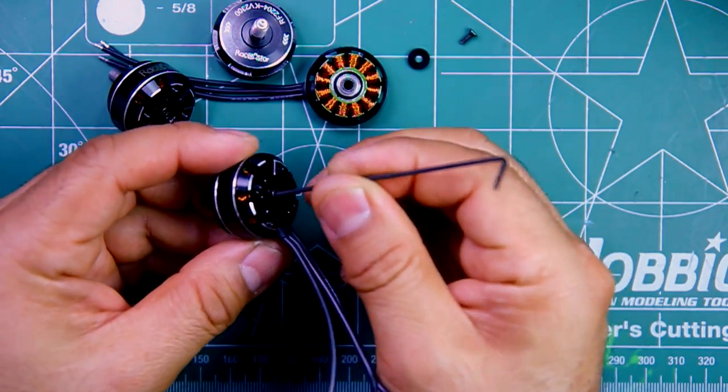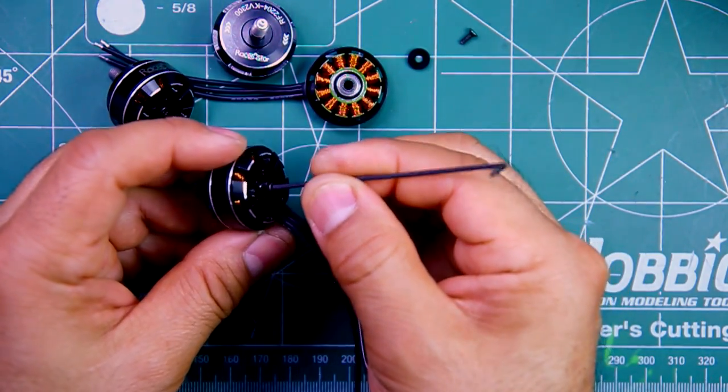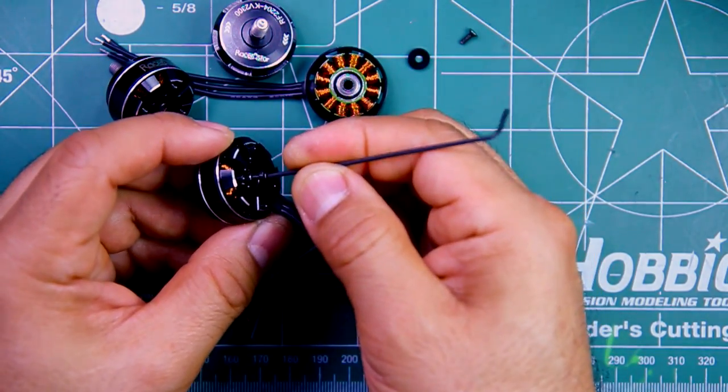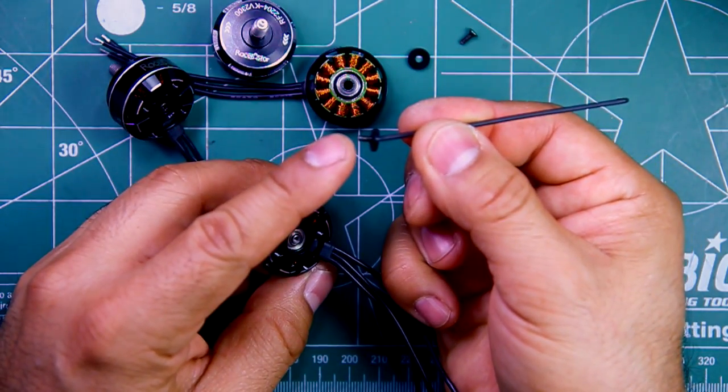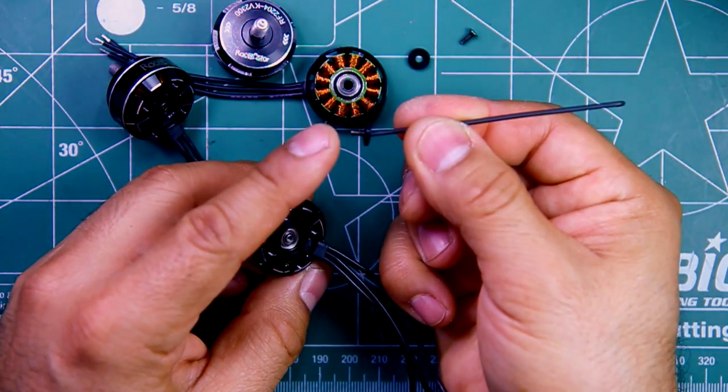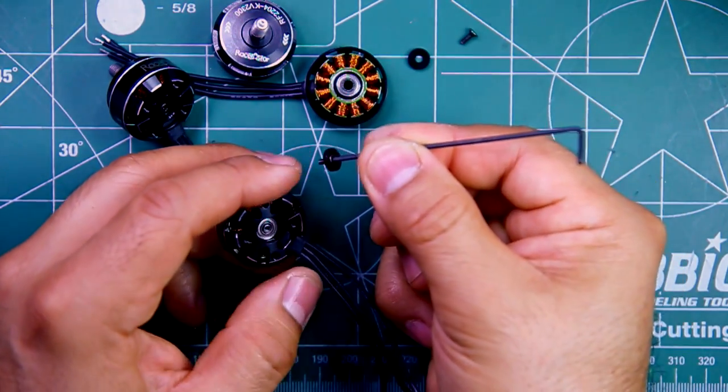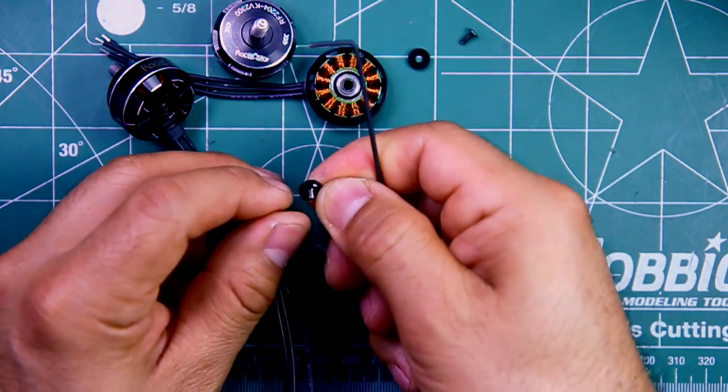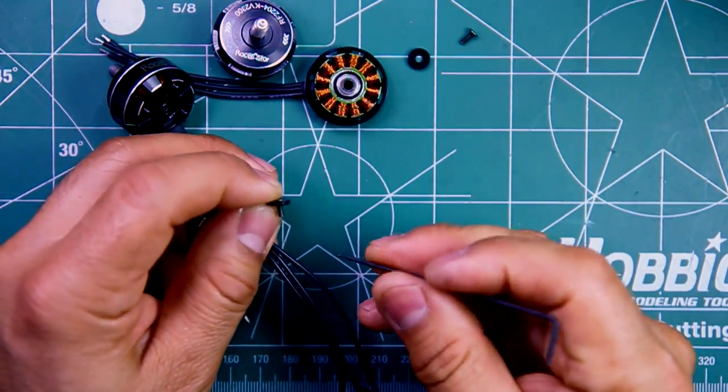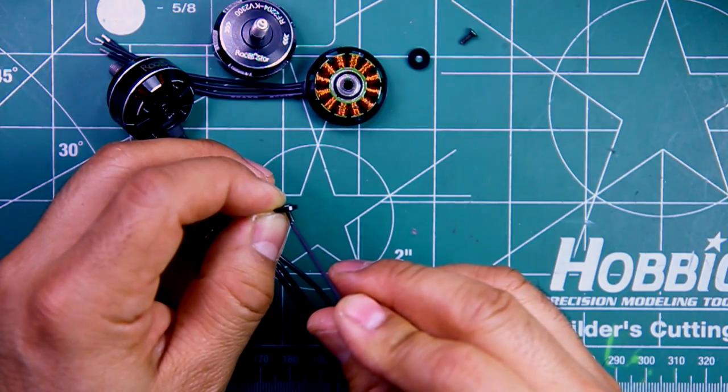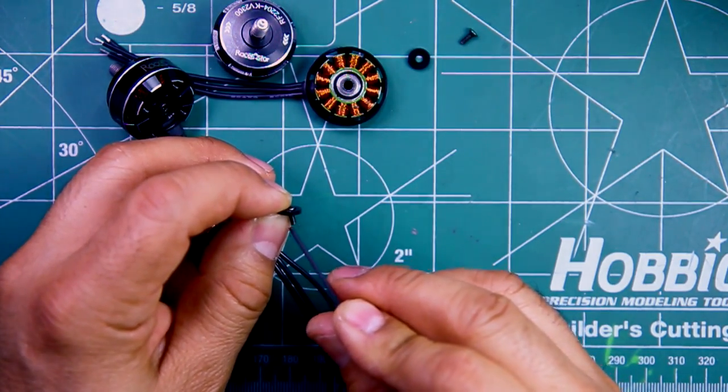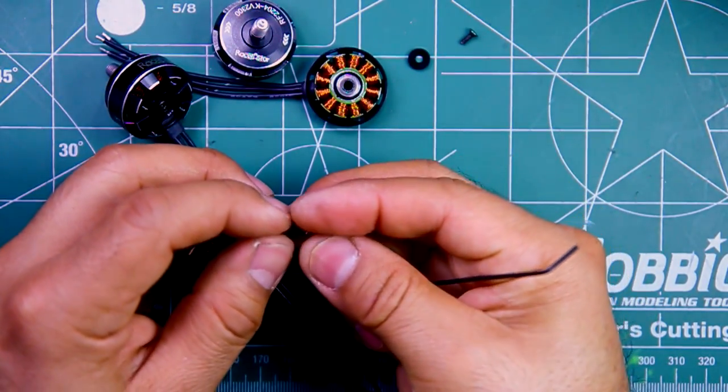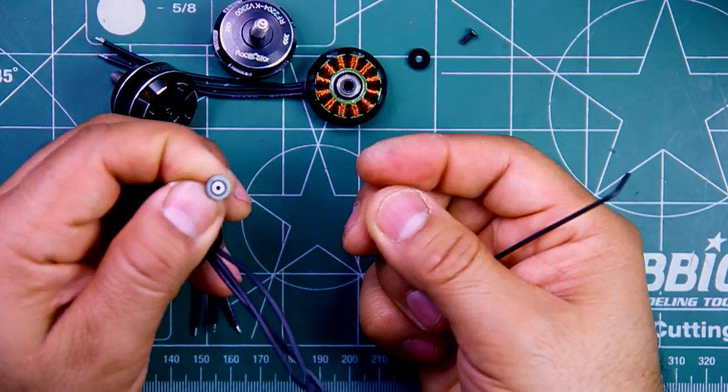So it would be good for you guys, if you buy this motor, to just pull the screws and add some Loctite. You don't want to lose those in flight. It'd be a pain to have to source a washer that fits. The screws seem to be the standard two millimeter screws, but the washer, there's no way you'll find something similar.